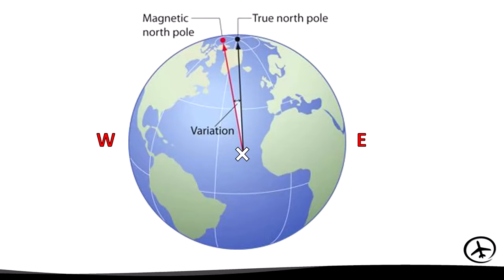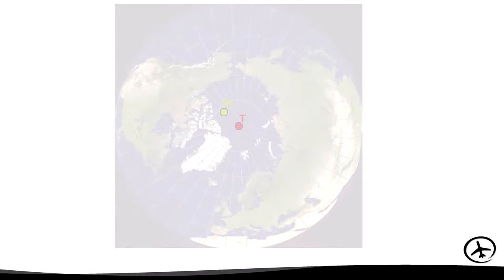Let's see an example. Suppose we are at the point marked with the white cross. If we draw a straight line to true north and another to magnetic north, the angle between these two lines would be the magnetic variation. In this particular case, magnetic north is to the left of true north — in other words, to the west of true north — so we say that we have a west variation. This variation will vary depending on our position on earth.